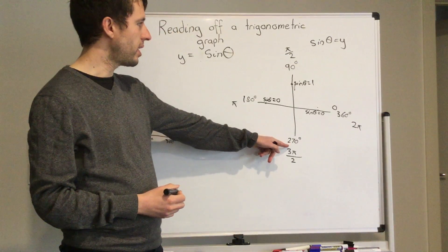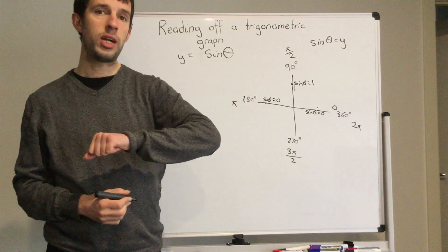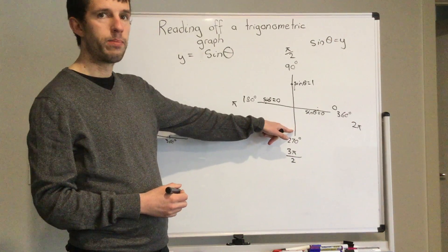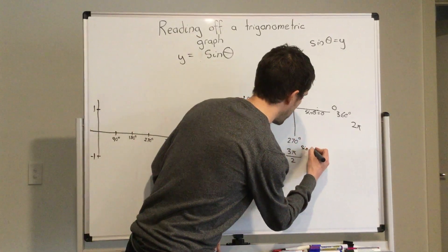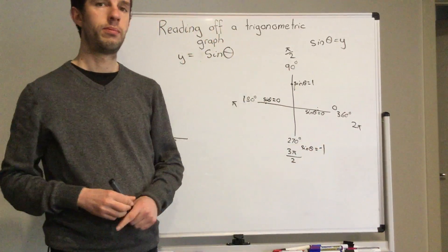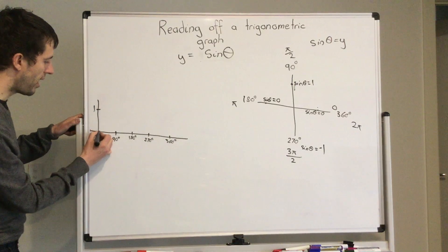Exactly the same here at 270 degrees. We are at negative one, so our graph for sine alpha or sine 270 degrees is going to be negative one. So we can draw that on here.